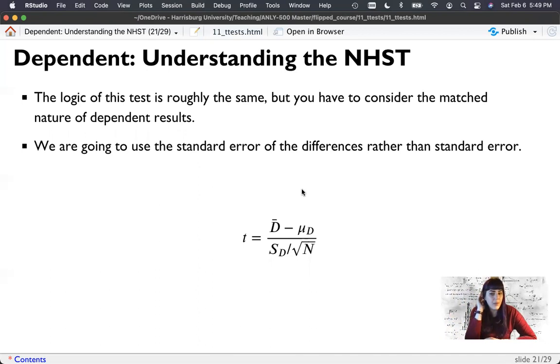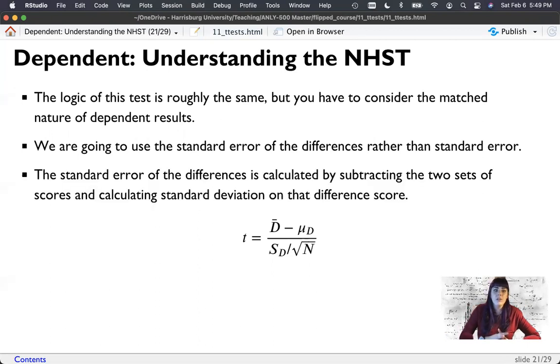And remember with our independent t-test, what we have was group one minus group two divided by this huge long formula to deal with the standard error because we had two different groups of people and we kind of had to juggle and weight their standard error. Now we have one group of people and we just create the standard error in the way that we always have. We just take time one, time two, subtract them and calculate the standard deviation and standard error on that difference score. So the standard error of the differences is calculated by subtracting those two scores and then just running your regular SD function on it. This is actually easier than independent test because independent test requires you to calculate for group one and group two and then do all this kind of weighted averaging.